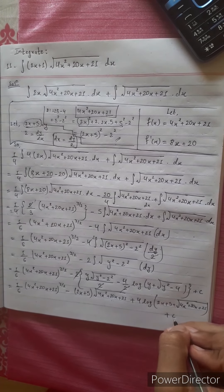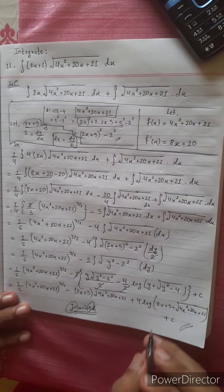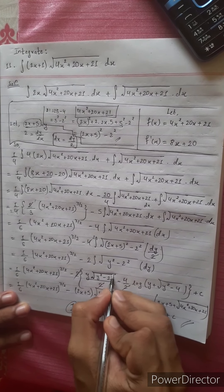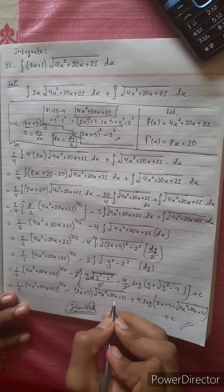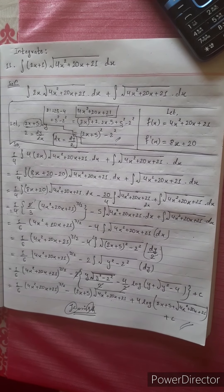Plus c. The final answer is: (1/6)(4x² + 20x + 21)^(3/2), minus (2x + 5) times under root of (4x² + 20x + 21), plus 4 log of [(2x + 5) + under root of (4x² + 20x + 21)], plus c. Thank you very much.